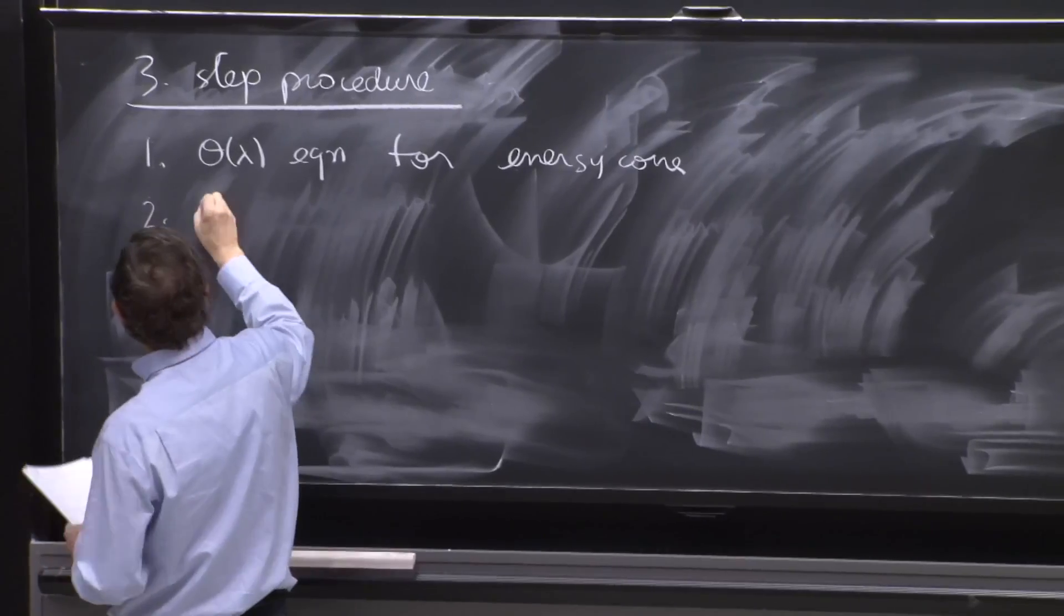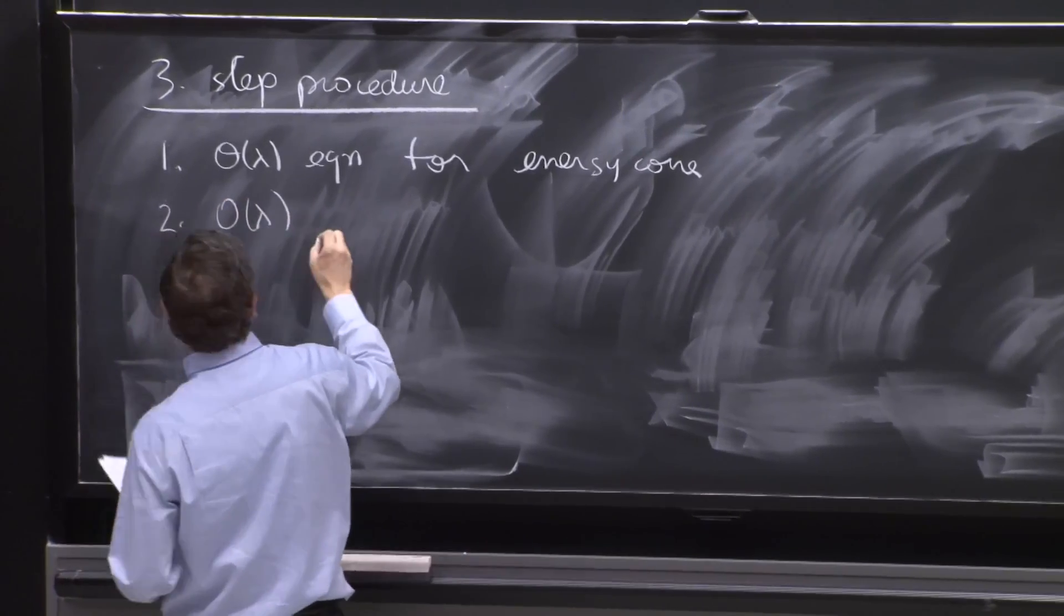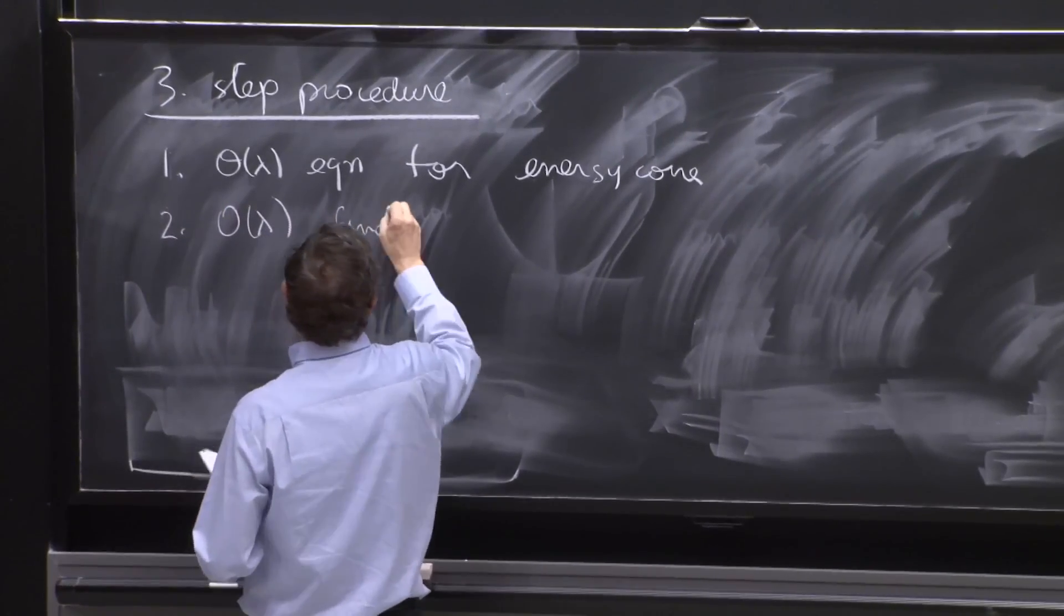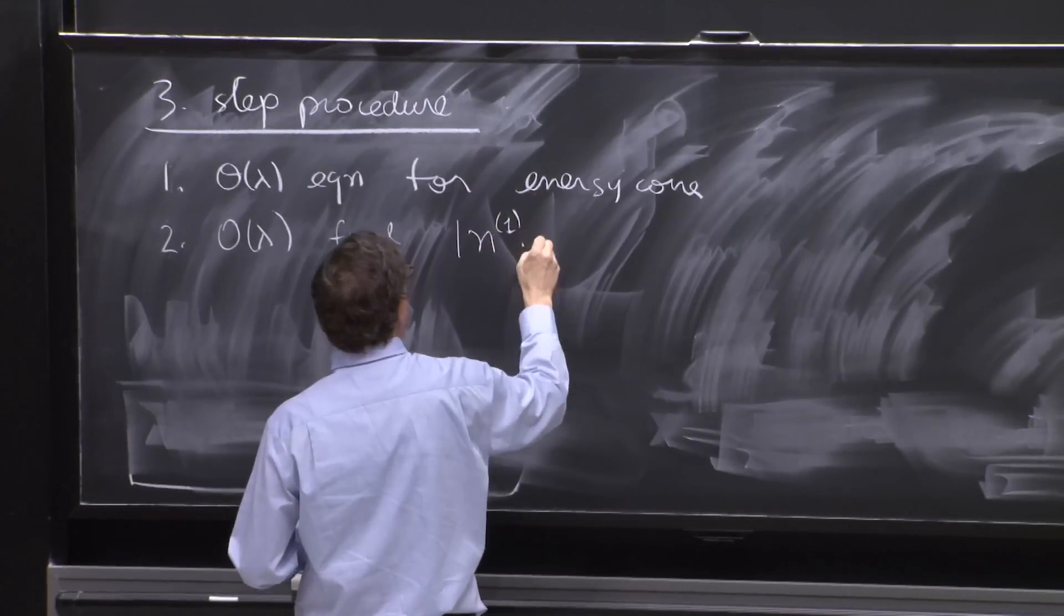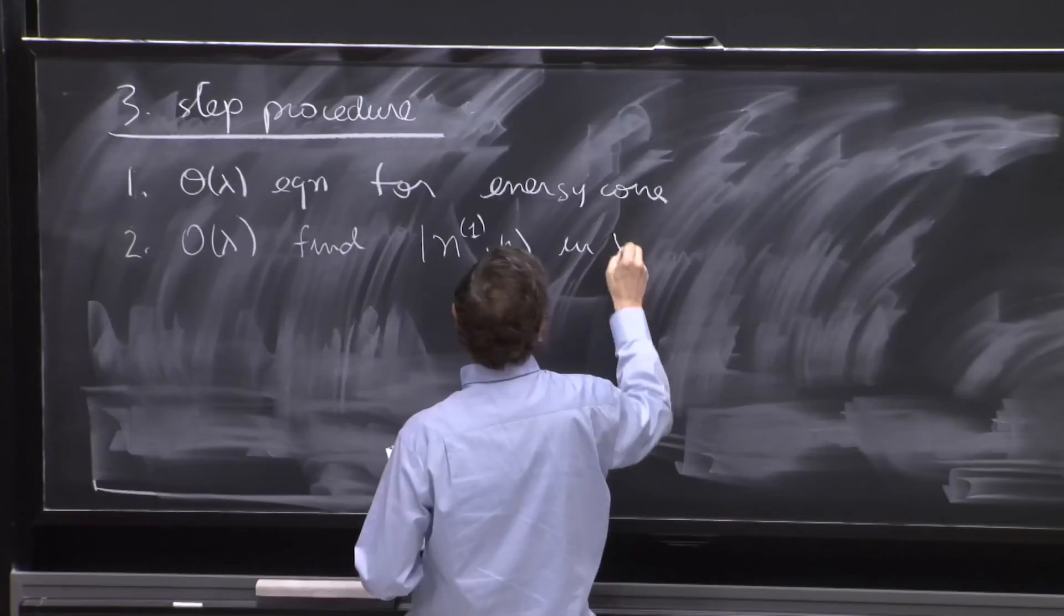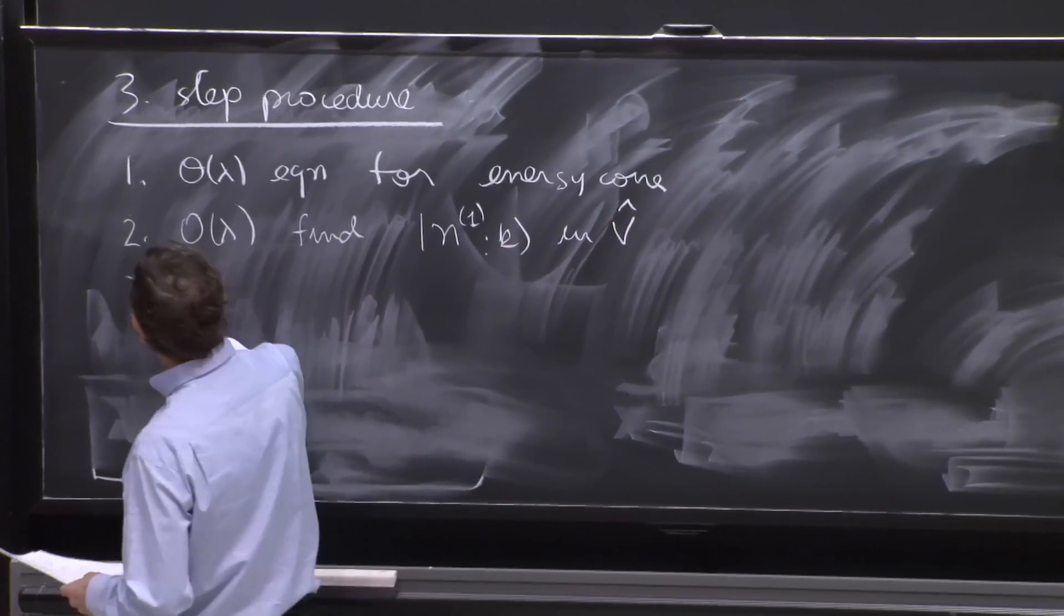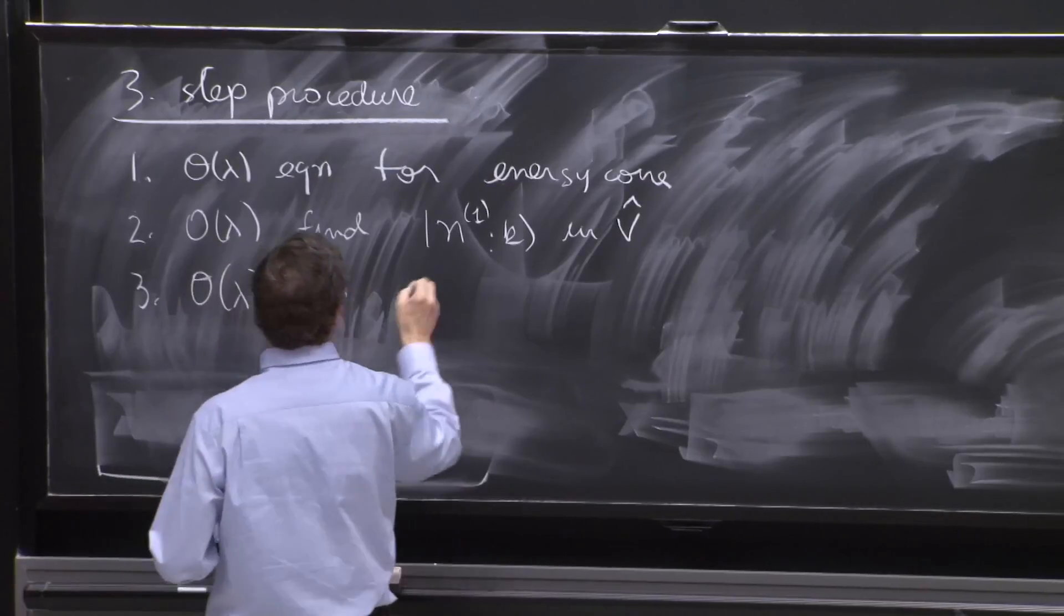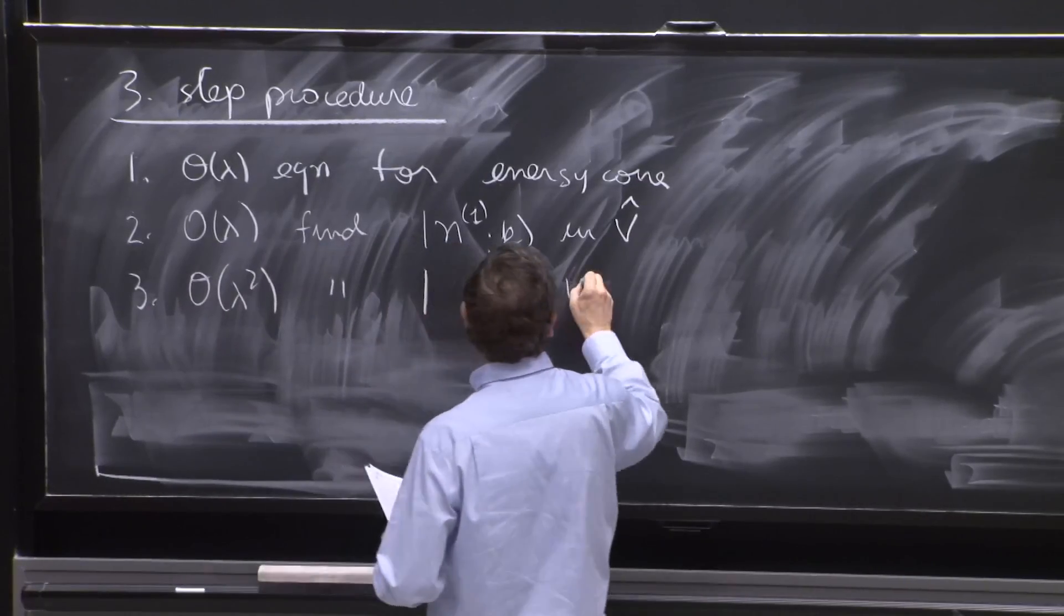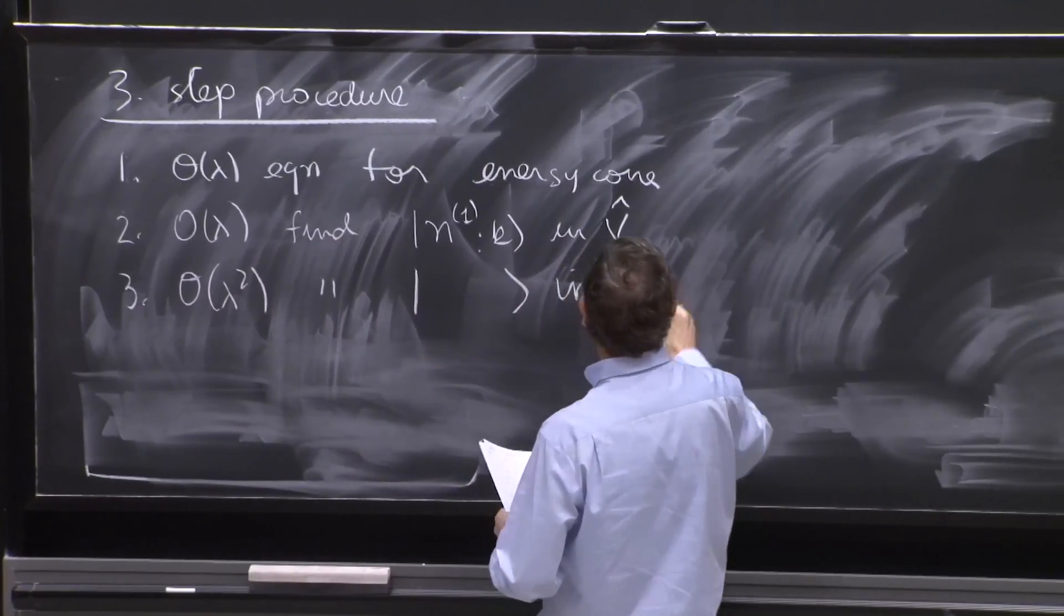Two, order lambda equation to find the component of n1k in v hat. And three, we're going to look at the order lambda squared equation to find the component of that same state in the degenerate subspace.